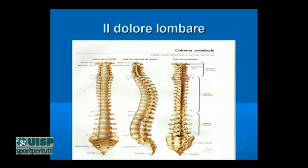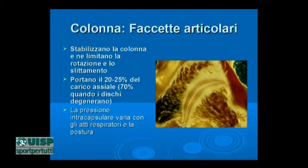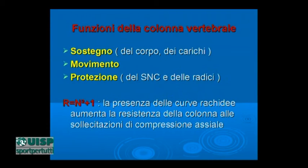Le tre curvature servono perché, come vediamo nella prossima diapositiva, è una legge fisica. La presenza di queste curvature aiuta a sopportare meglio i carichi. La resistenza di un corpo è uguale al numero di curvature al quadrato più uno. Quindi la colonna vertebrale, avendo tre curvature — tre per tre nove più uno dieci — ha una resistenza dieci volte superiore che non se fosse completamente dritta.